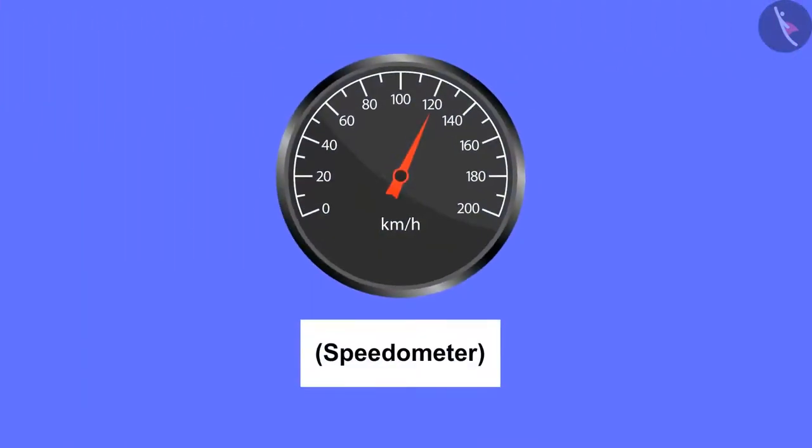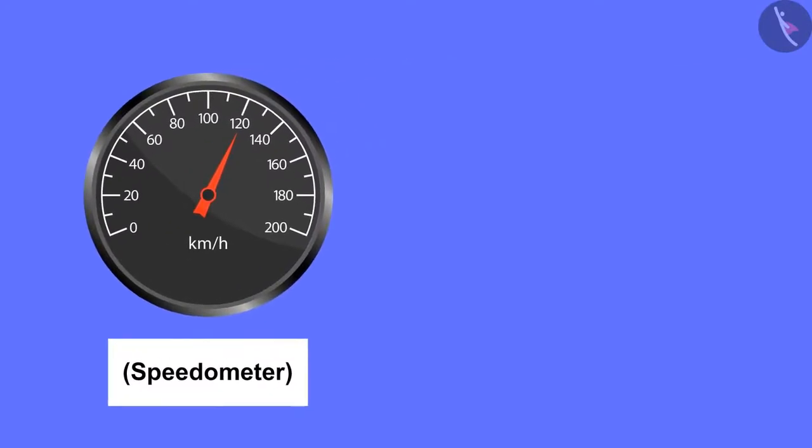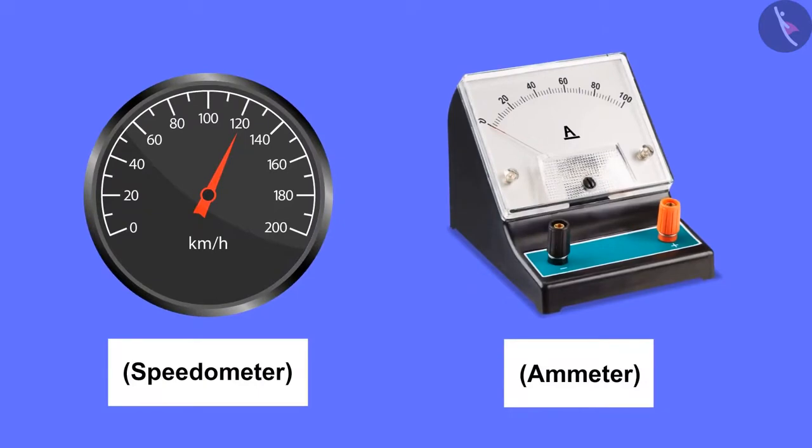Just as the speedometer is used to measure the speed of the vehicle, similarly in any circuit an instrument named ammeter is used to measure the electric current.